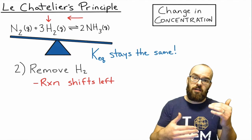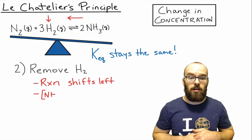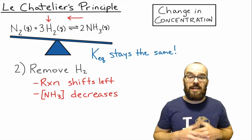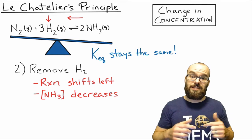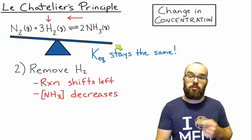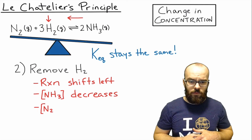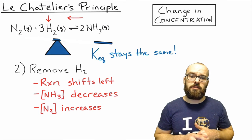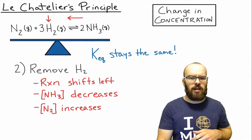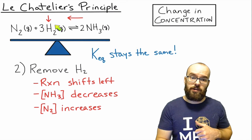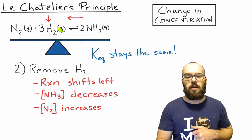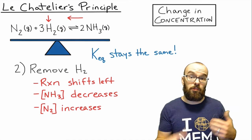Shifting the reaction to the left causes the NH₃ concentration to decrease, and the nitrogen concentration to increase. The hydrogen concentration also increases as we form more nitrogen and hydrogen gas. Again, we predicted all of that using Le Chatelier's principle.